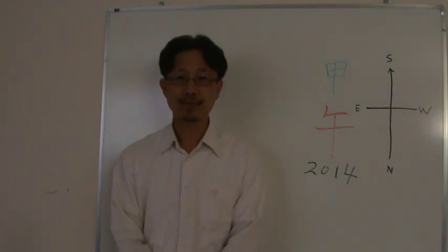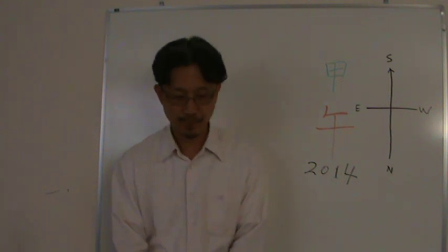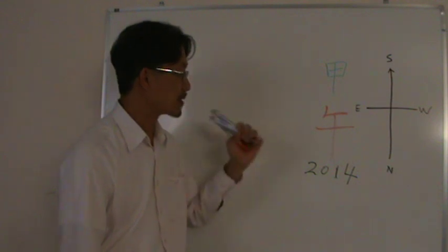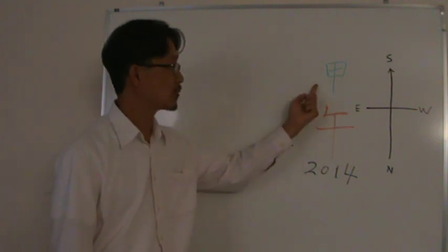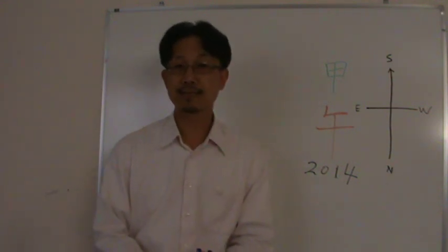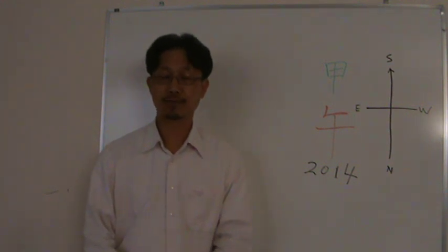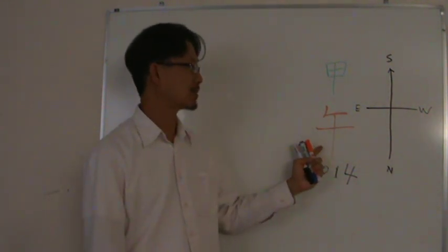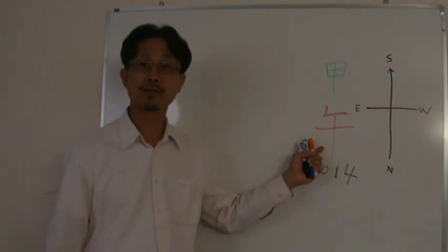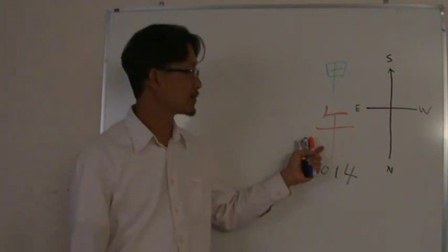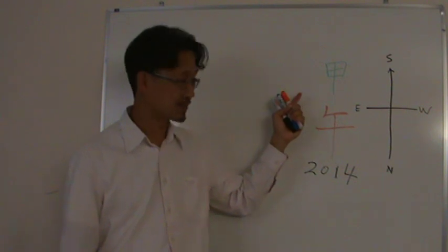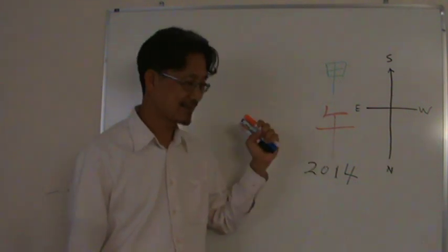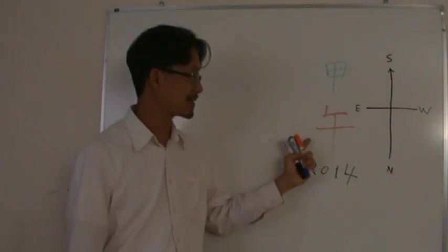So, let's look at the characteristic of the year. This year, let's look at here. 夕 is wood, wood is the Yanwood, like a tree, very big tree. And horse, 夕 is horse, horse is fire. So, what's that mean? The wood on top and the fire underneath. The wood fit the fire.